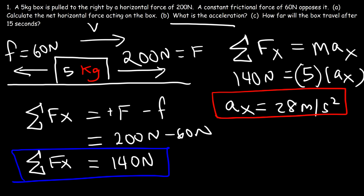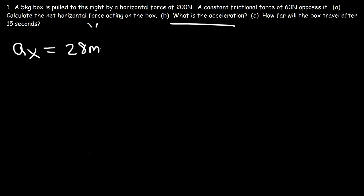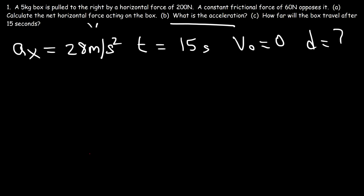Part C: how far will the box travel after 15 seconds? So that's simply a kinematics problem. Let's write down the important information. We have the acceleration: 28 meters per second squared. We know the time: 15 seconds. We don't have an initial speed, so we're going to assume that the box accelerated from rest — initial speed is zero. Our goal is to find the distance traveled by the box.